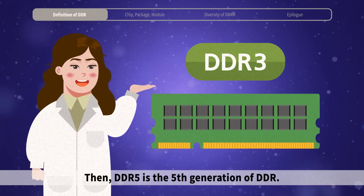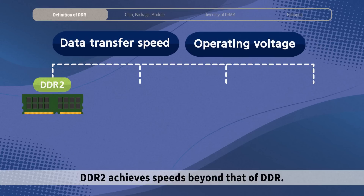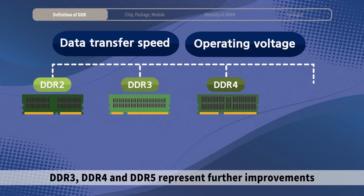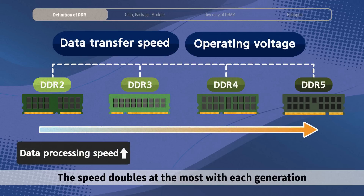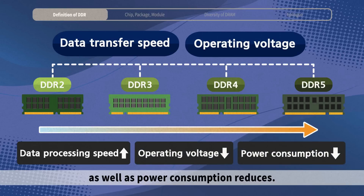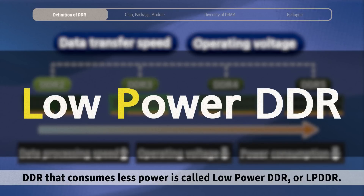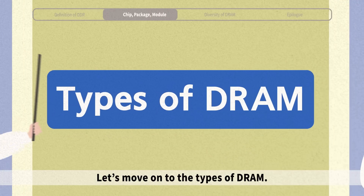DDR5 is the fifth generation of DDR. DDR2 achieves speed beyond that of DDR, and DDR3, DDR4, and DDR5 represent further improvements in memory technology. The speed doubles at the most with each generation, while the operating voltage decreases and power consumption reduces. DDR that consumes less power is called low-power DDR, or LPDDR.